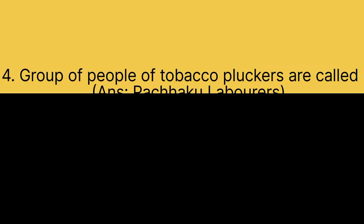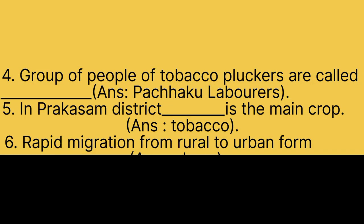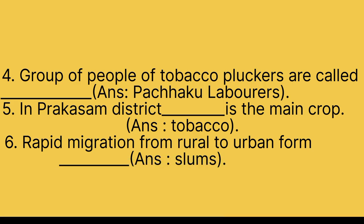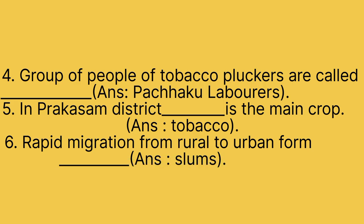Fourth one: Group of people of tobacco pluckers are called Pachaku labors. Answer is Pachaku labors. Fifth one: In Prakasham district, Dash is the main crop. Answer is Tobacco.